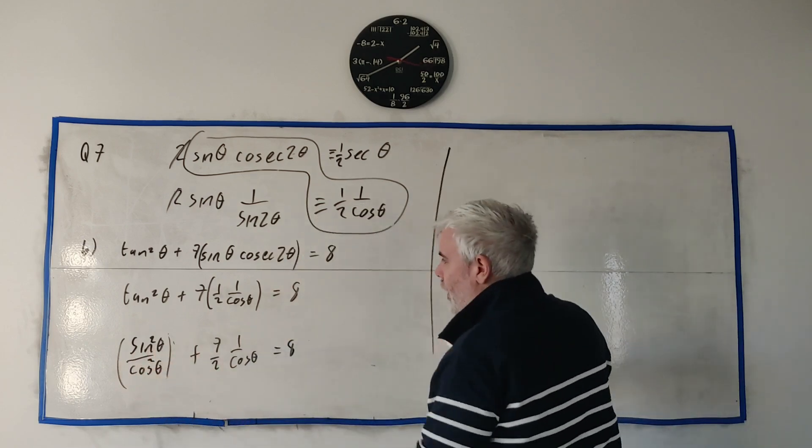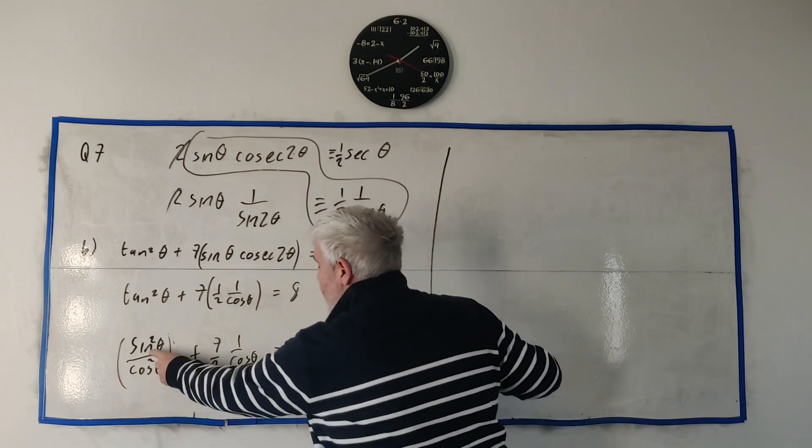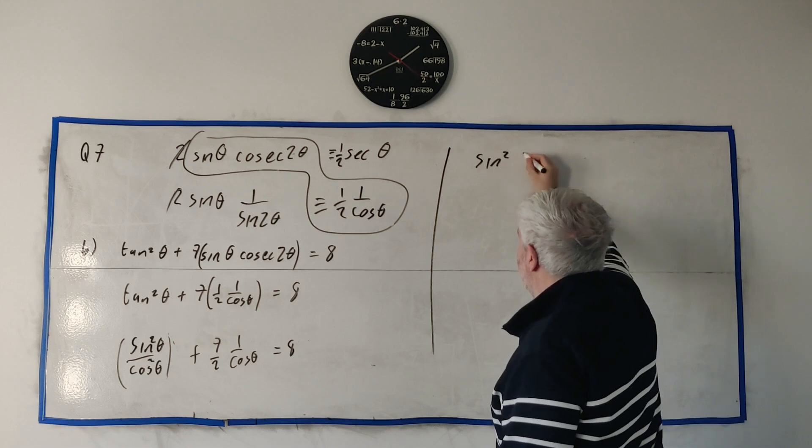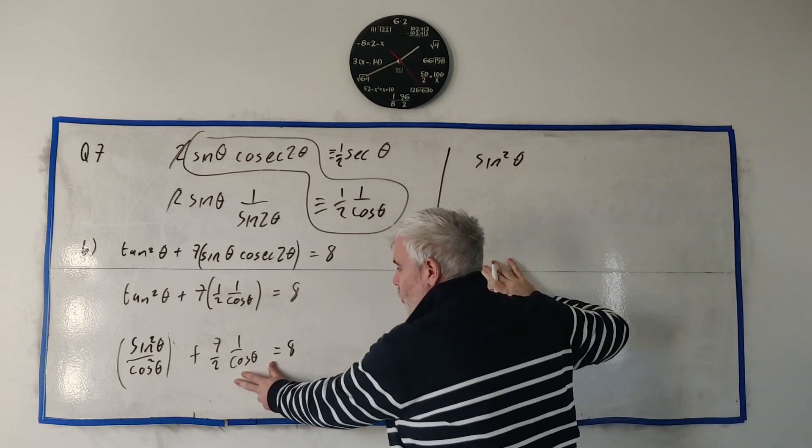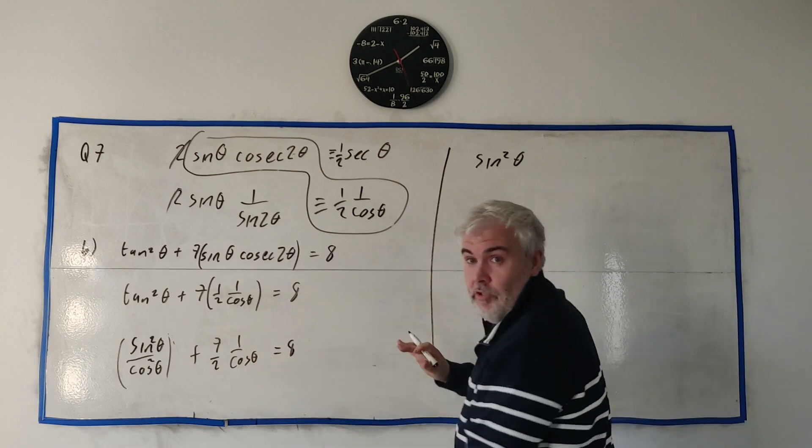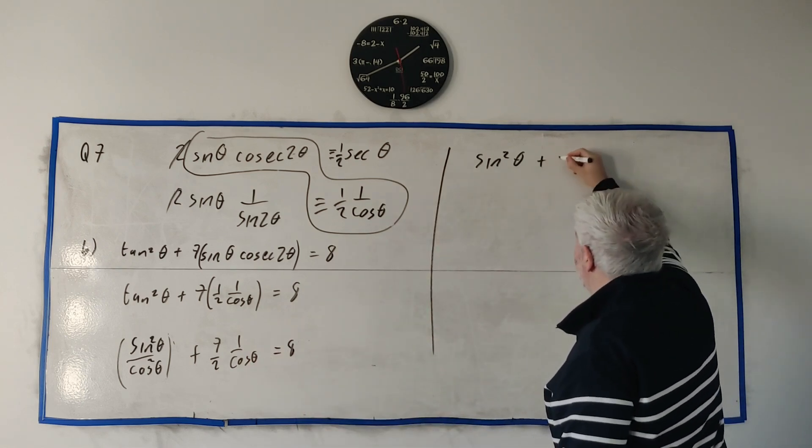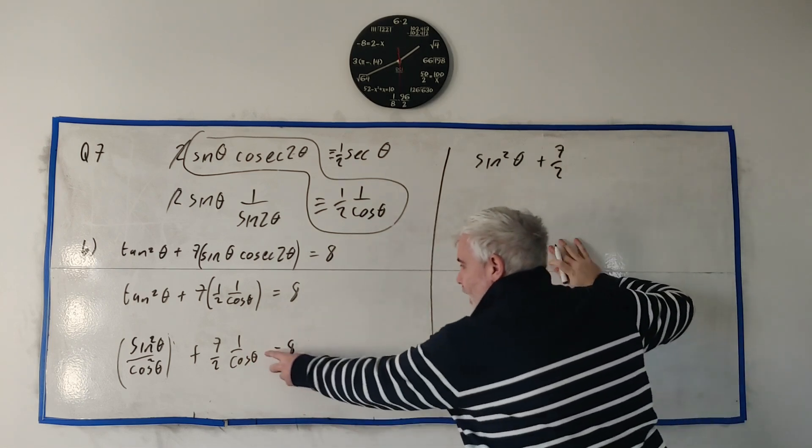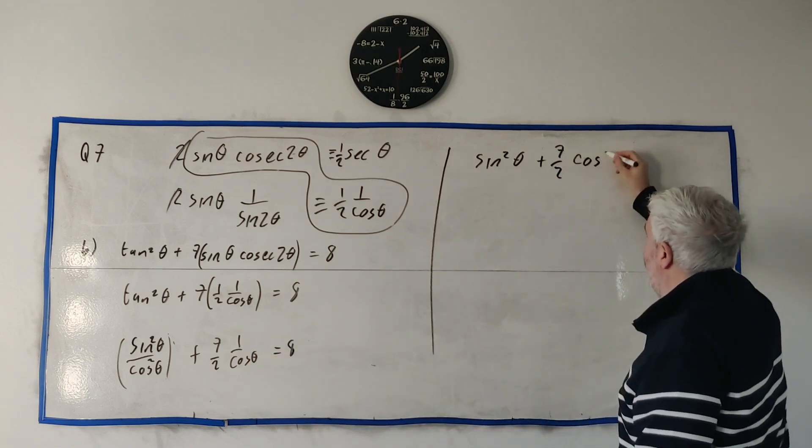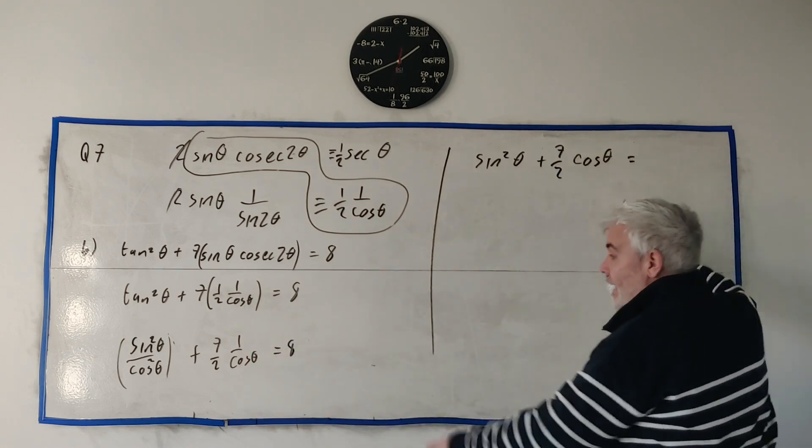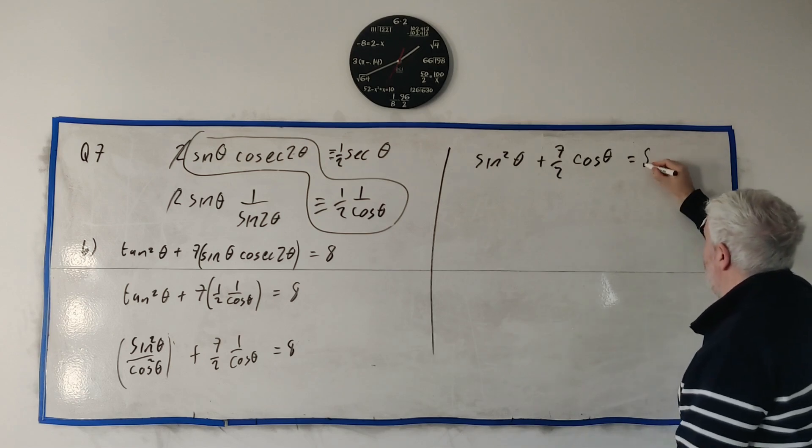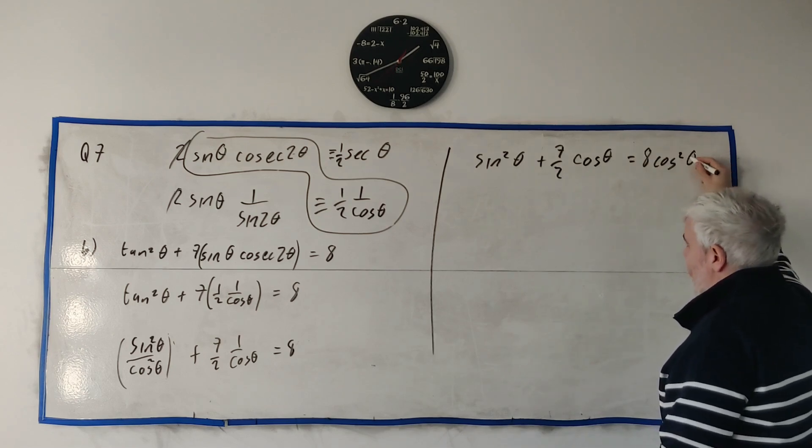And this becomes 7 over 2, 1 over cosine θ equals 8. Next thing, well let's move this squared in to both of them. Next thing I'd do is get rid of these bottom rows. They have very similar bottom rows. If we multiply every one by cosine squared, it should all disappear.